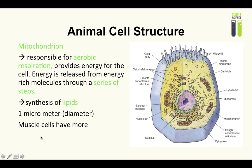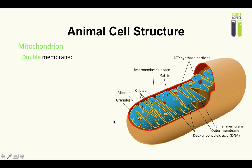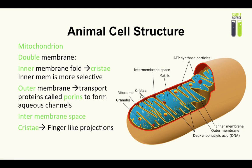Let's look at the mitochondrion's structure, which is very well suited for its purpose. Like the nucleus, it is a double membrane organelle. The inner membrane is more selective — it controls more strictly what enters and leaves. It makes folds called cristae, which increase the surface area and therefore increase efficiency by allowing more reactions to take place.